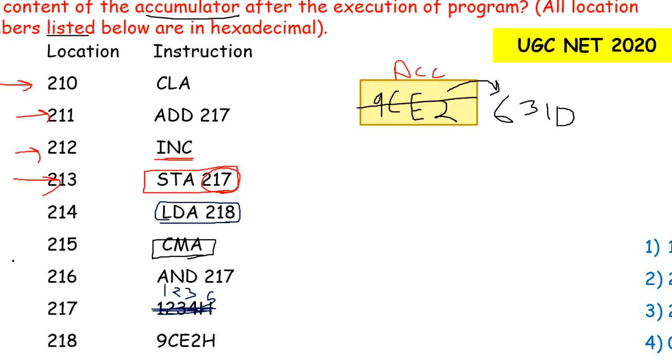At this point we have executed the instruction at location 215. Right now our accumulator has 631D. Next instruction is AND 217. AND the content of accumulator with content of 217. Our accumulator content is 631D. Content of 217 is 1235 which we stored earlier. You have to perform AND operation on these two.